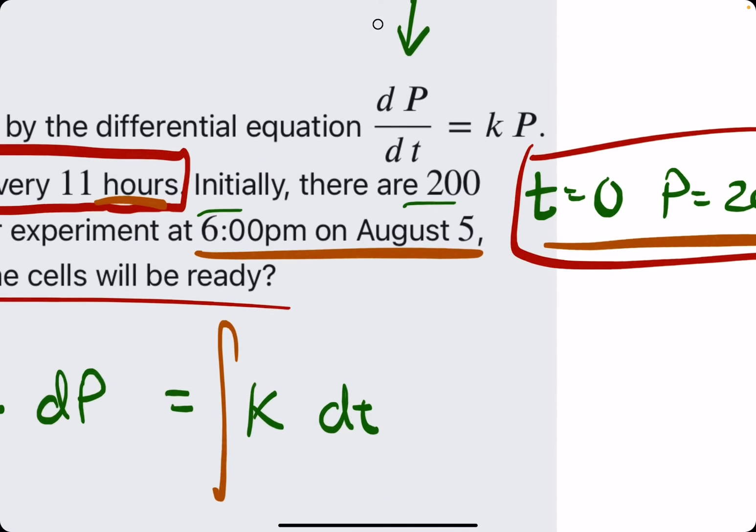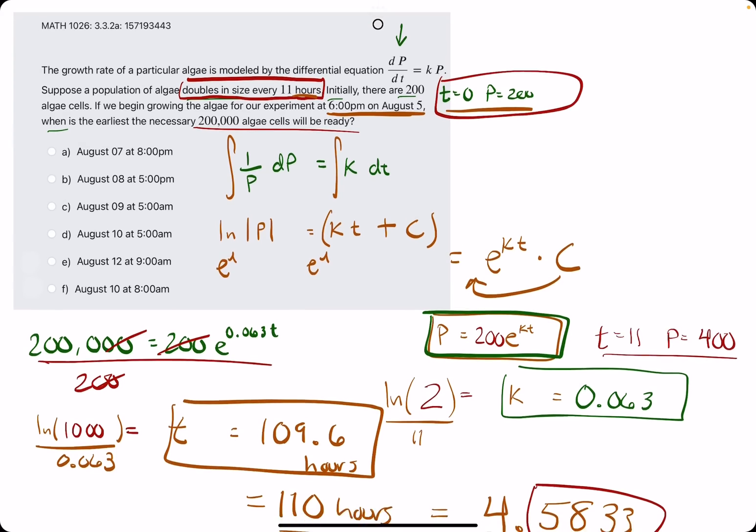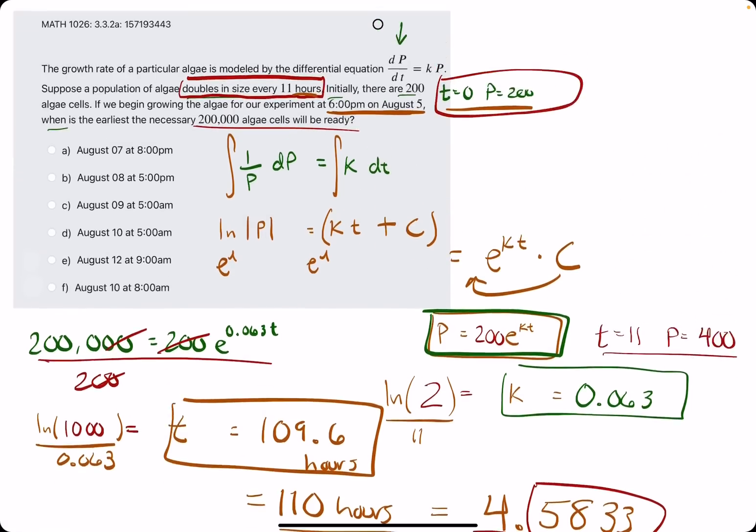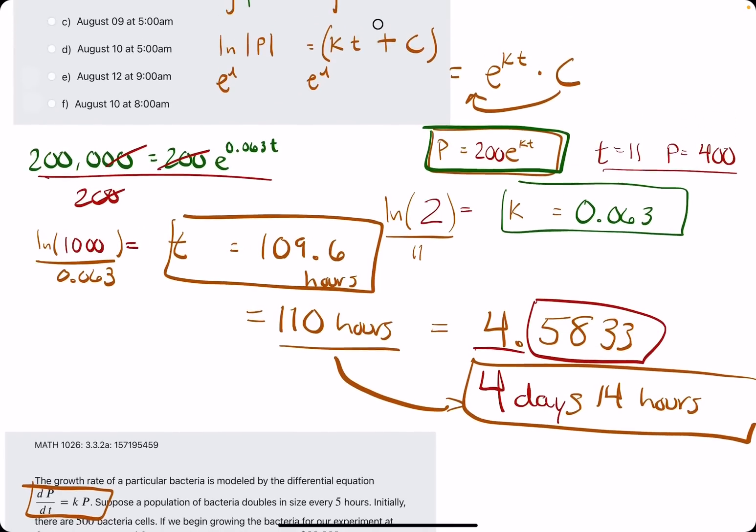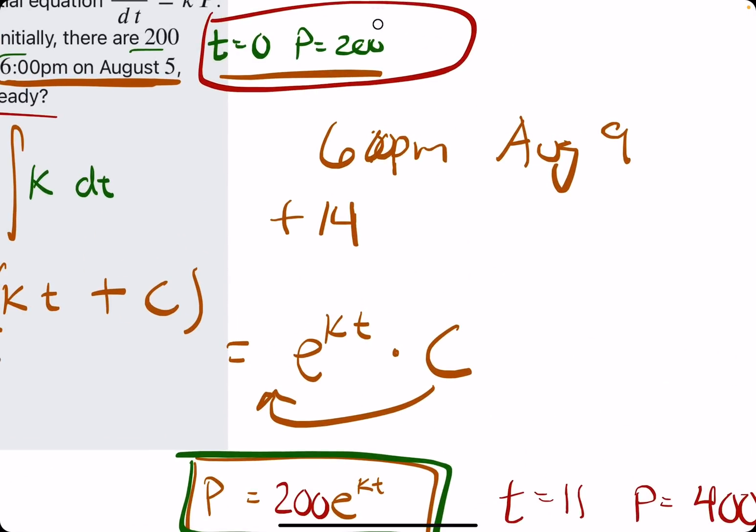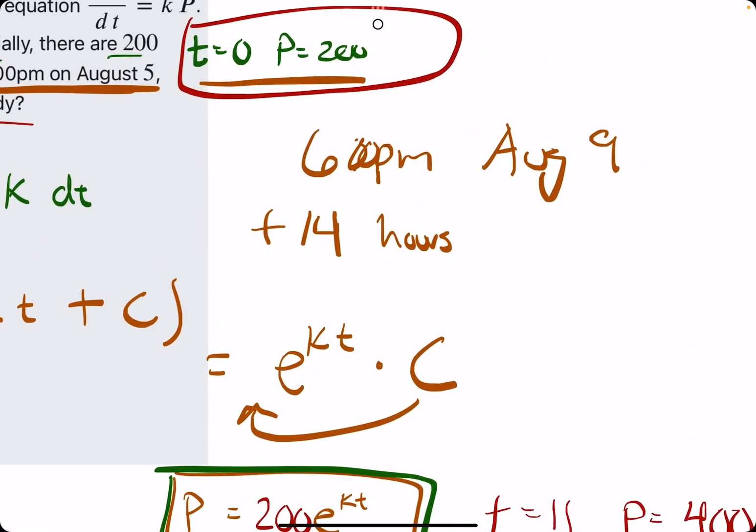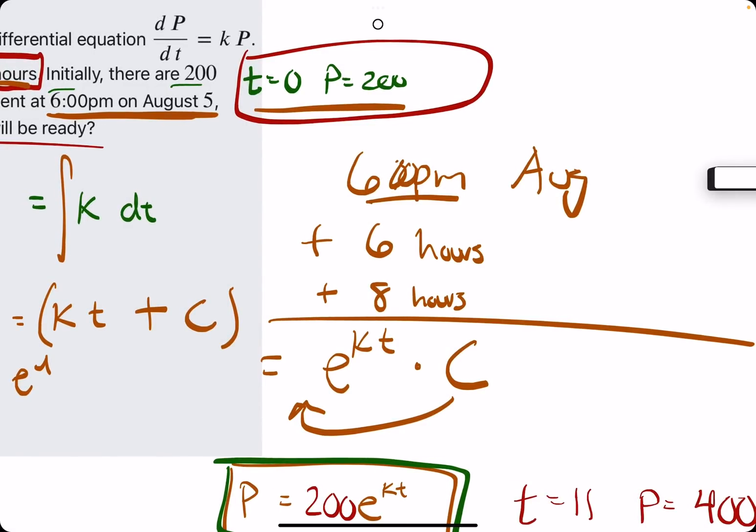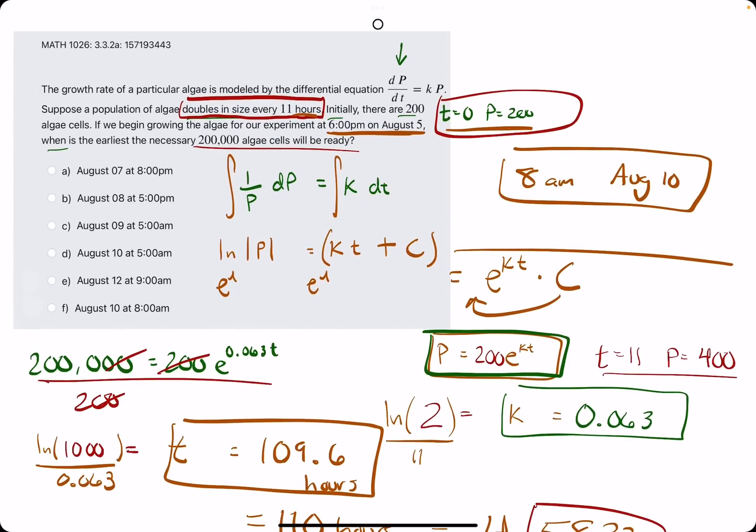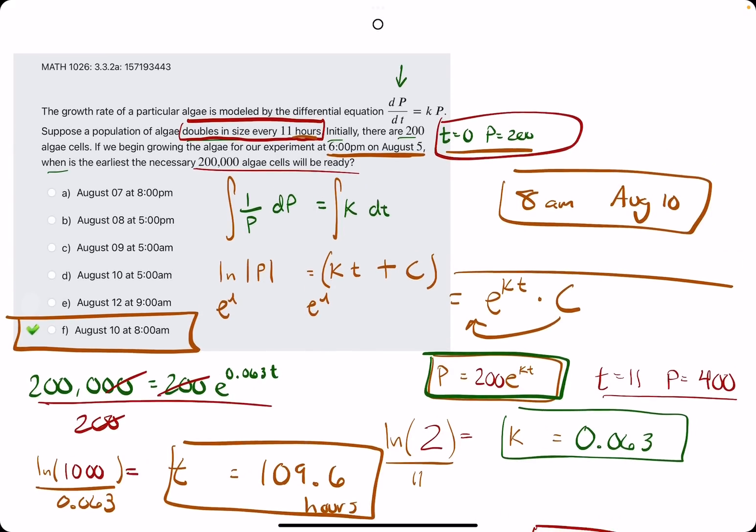We want to know what is 4 days and 14 hours past August 5th. So let's do August 5th plus 4 days. That's 6 p.m. on August 9th, just adding the 4 days, right? So now we want to add 14 hours to the 6 p.m. So, well, 14 hours is 6 hours plus 8 hours. The reason I broke up 6 and 8 is because if we add 6 hours to 6 p.m., it's going to take us to midnight or 12 a.m. on August 10th. And then plus 8 hours will take us all the way to 8 a.m. on August 10th. So that is our answer, F.